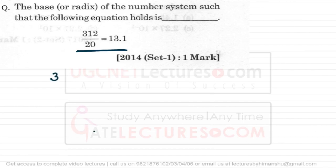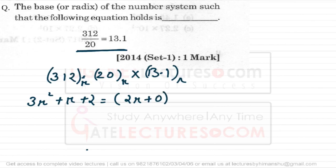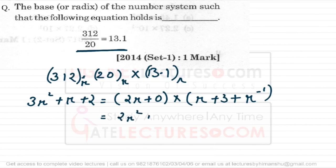To solve this, I am going to cross-multiply. Let the base be r. Converting all these numbers into decimal: 3r squared plus r plus 2 equals (2r + 0)×r + 3 + r to the power minus 1. When a digit appears after the decimal point, you multiply it by r to the power minus 1. Multiplying those terms out gives 2r squared plus 6r plus 2.